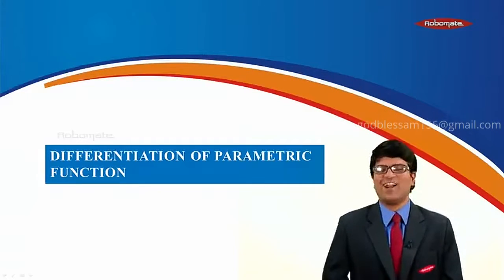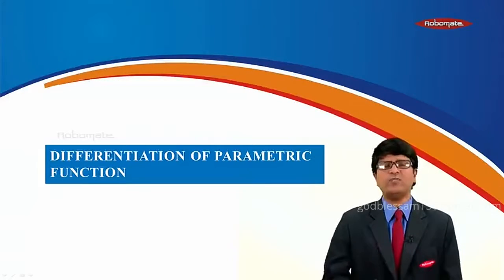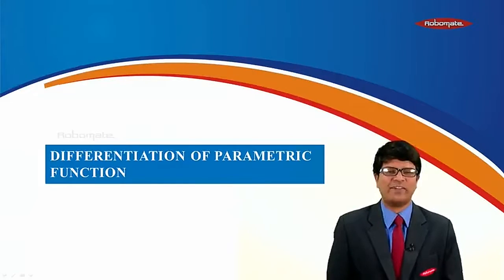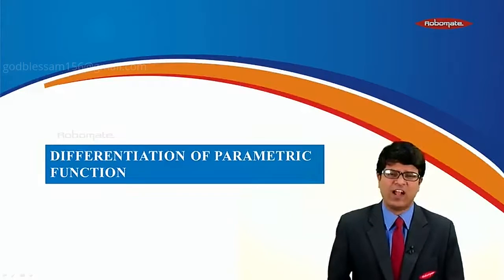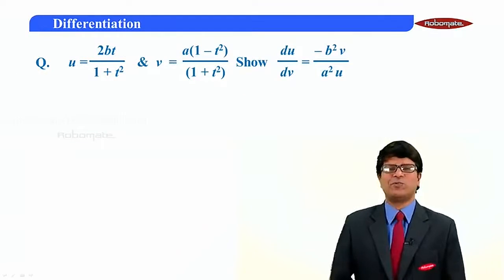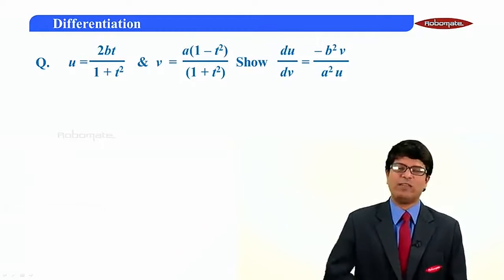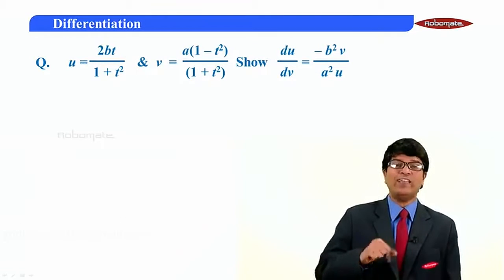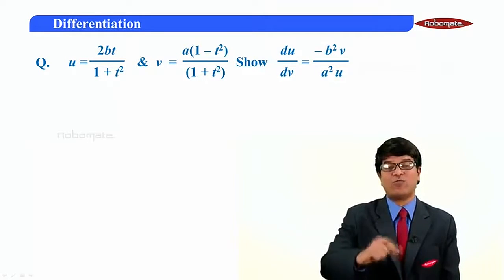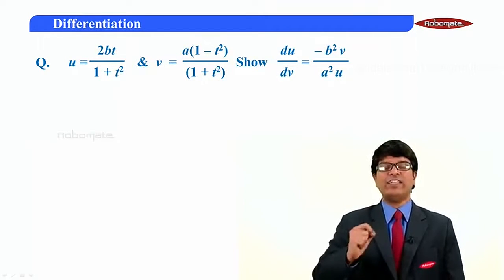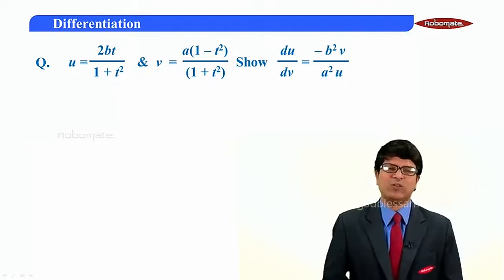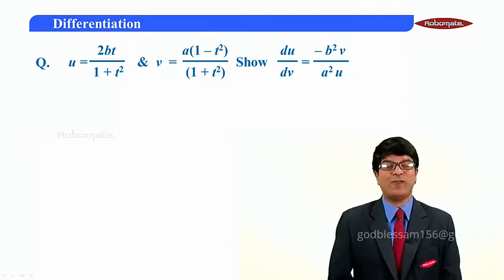Hello students, let us start with the next module. In this module, we discuss differentiation of parametric functions. Let us start with the question: u is equal to 2bt upon 1 plus t square, v is equal to a times 1 minus t square upon 1 plus t square. We need to show that du by dv is minus b square v upon a square u.